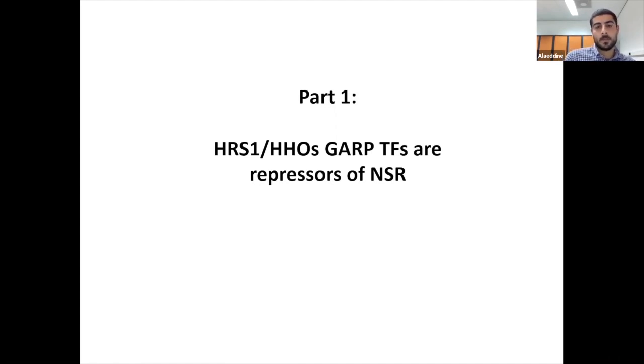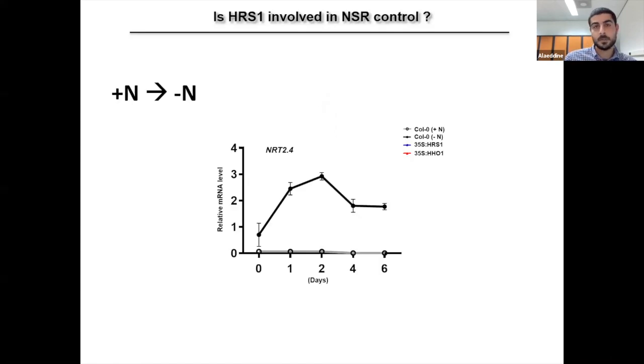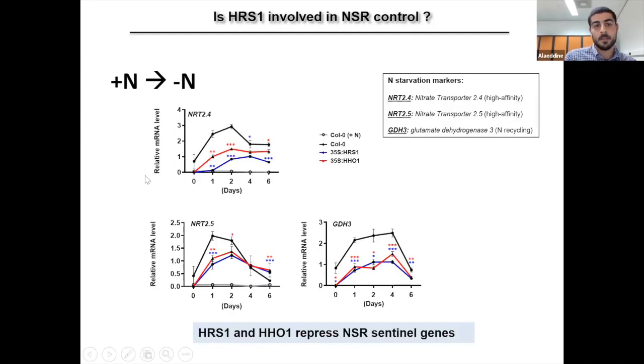So in order to further study this regulation of NRT2-4 by HRS1, we grow plants in N-containing medium for two weeks, and then we transfer them to minus N. As expected, nitrogen starvation induces the expression of NRT2-4, while it can barely be detected in plus N conditions. Interestingly, the overexpression of HRS1 and HHO1 in blue and red seems to attenuate their response. The expression of NRT2-4 in these two overexpression lines seems to be attenuated in response to N starvation.